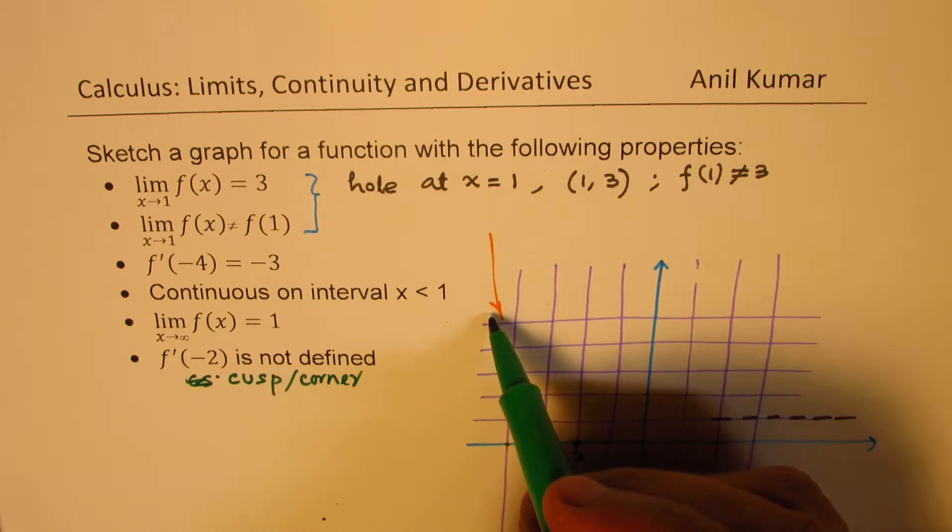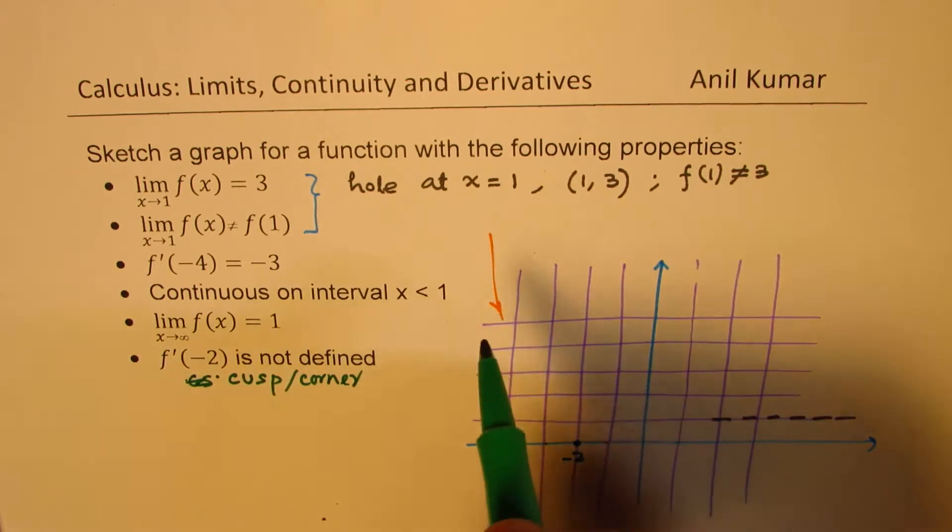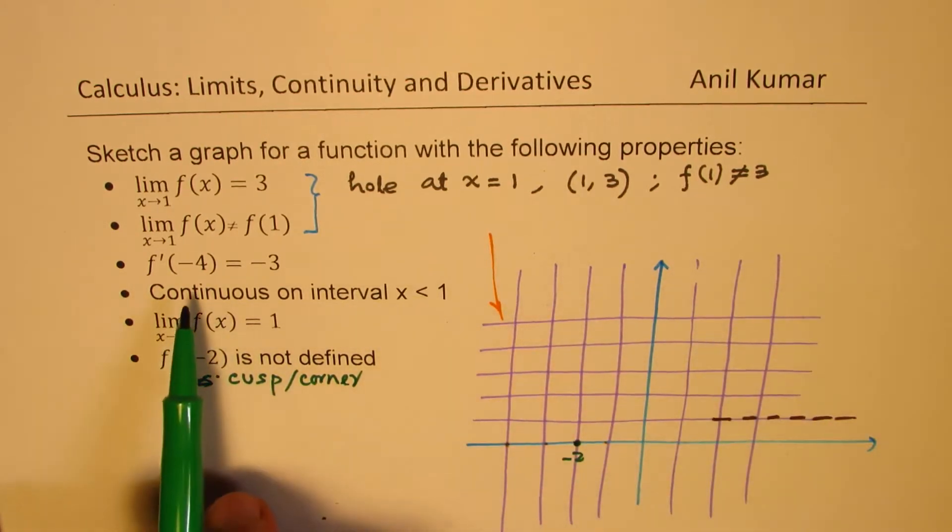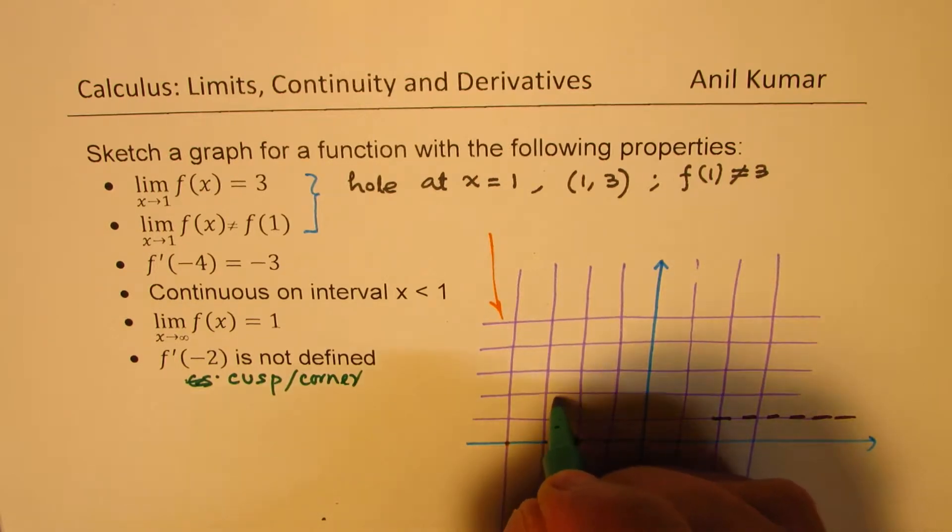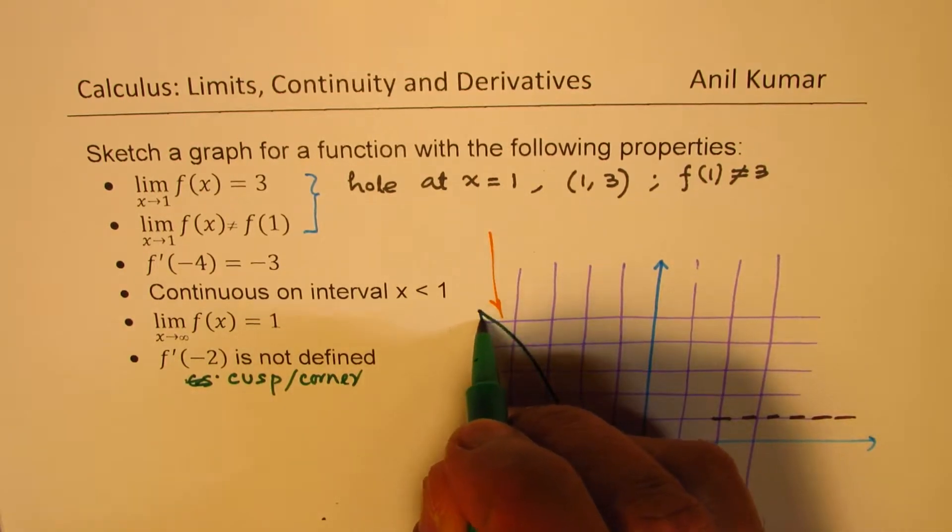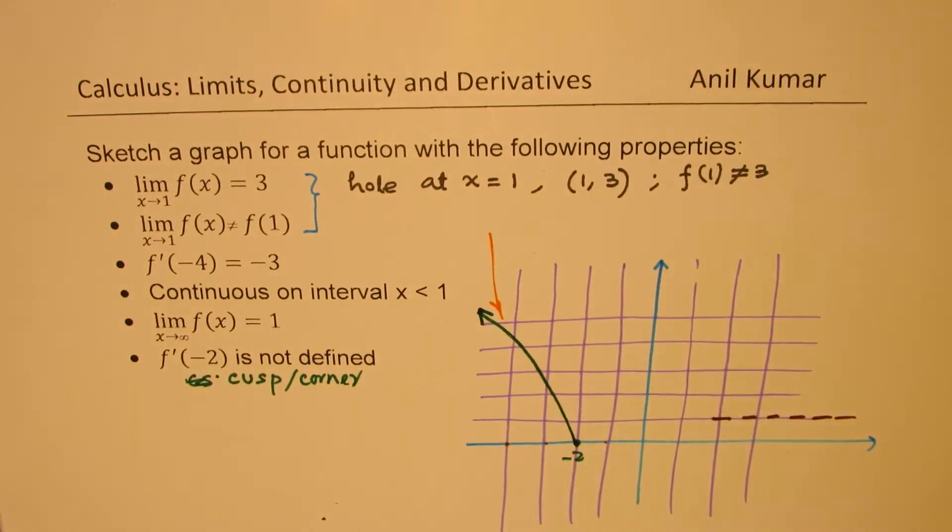And on this side, we have the condition that the slope is negative. So slope is negative in this direction. So our graph could be kind of like this. You see that? That could be the graph.